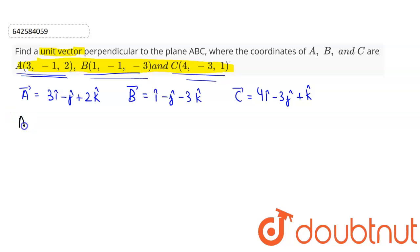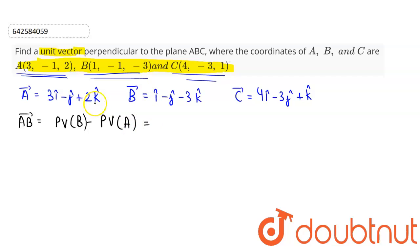Vector AB is given by position vector of B minus position vector of A. So i cap minus 3i cap gives minus 2i cap. The j cap terms cancel out. And minus 3k cap minus 2k cap gives minus 5k cap.